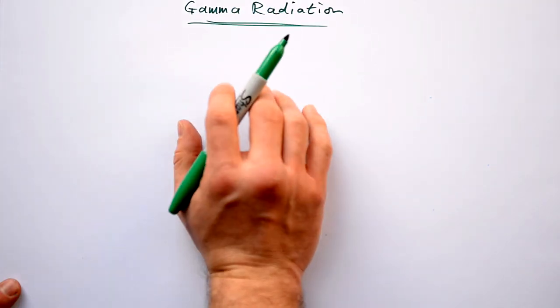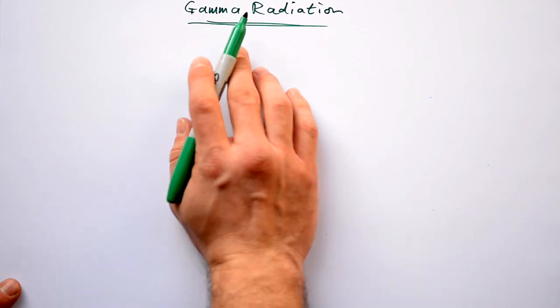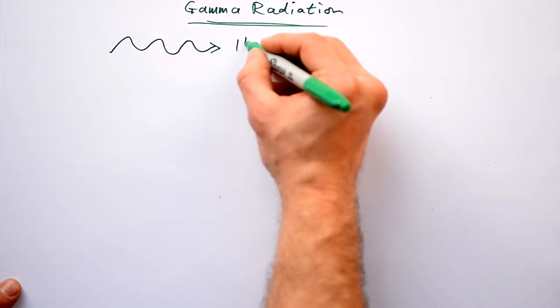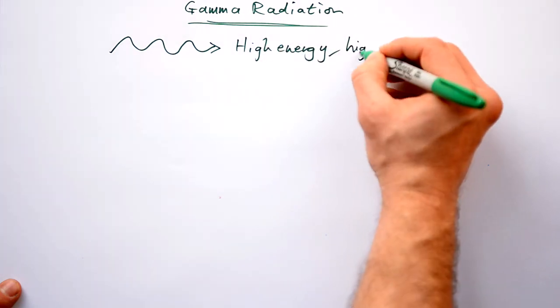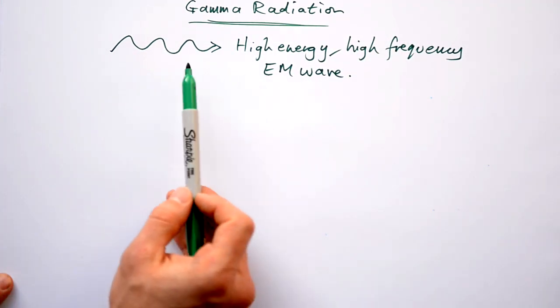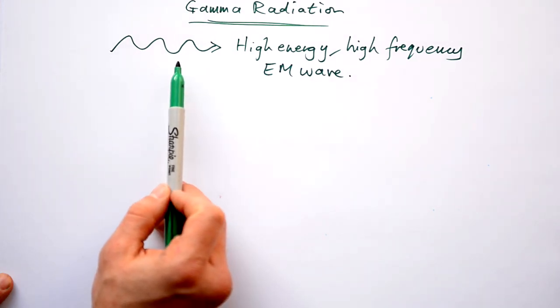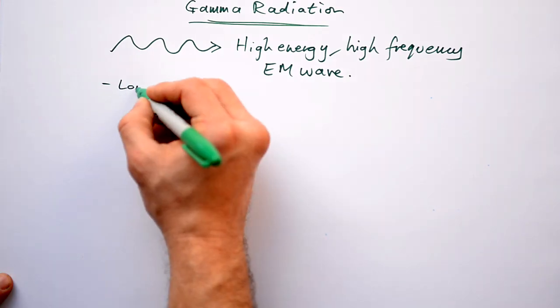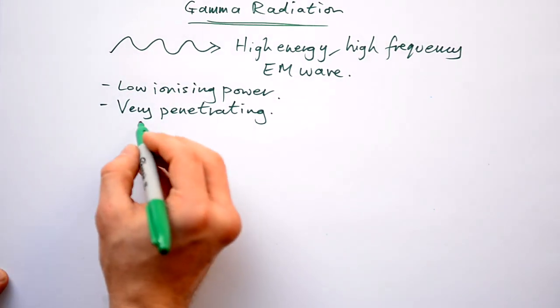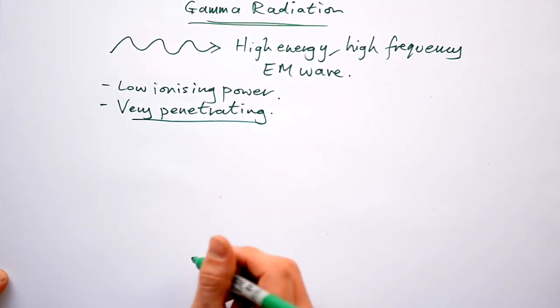The last type of radiation that you need to know about is gamma radiation. Now, whereas alpha particles and beta particles are particles, gamma radiation is a wave. It's a high-energy, high-frequency EM wave, electromagnetic wave. So it literally is just like light, but it's got a very high frequency, so it's much more dangerous. Having said that, it's not very ionizing. So why is it so dangerous? Well, it's because it can actually get to you.